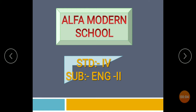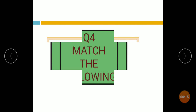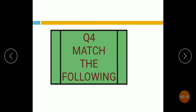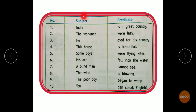Standard 4 Subject English 2 Revision. Question 4: Match the following. Students, you have to match the subject and predicate. For example, 'India is a great country.'